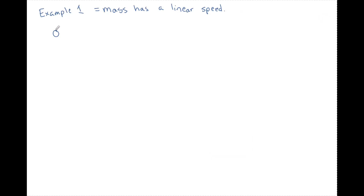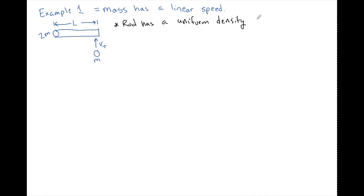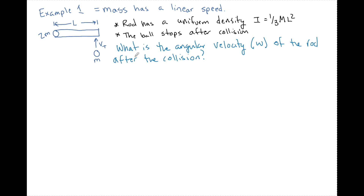Let's look at an example using this formula. I have a pivot point and a rod. This rod has a mass of 2m and a length of l — I love working in variables. A particle with mass m approaches the rod with some linear speed vt. The rod has a uniform density, so the moment of inertia equals (1/3)ml². I'm also going to tell you that when the ball strikes the rod, it stops — this makes the problem more straightforward. The question asks: what is the angular velocity ω of the rod right after the collision?